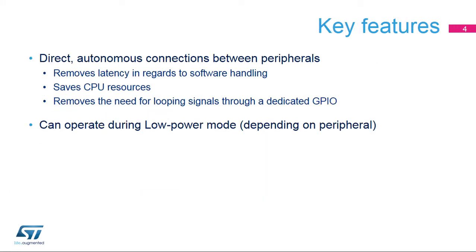The Interconnect Matrix offers two features. First, it ensures direct and autonomous connections between peripherals, allowing removal of latency in regards to software handling, thus saving GPIO and CPU resources. Second, the interconnection between certain peripherals can even operate during low-power modes.